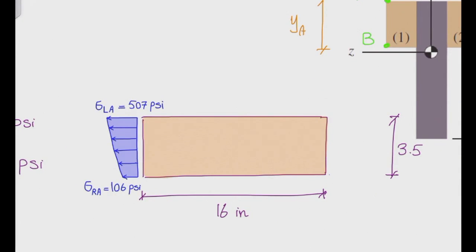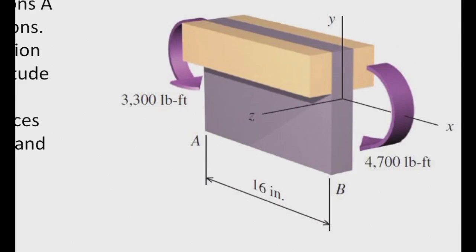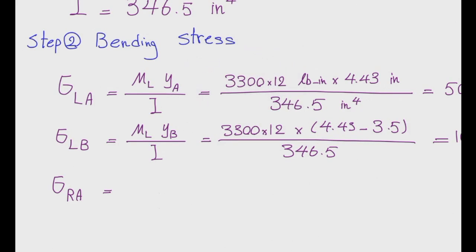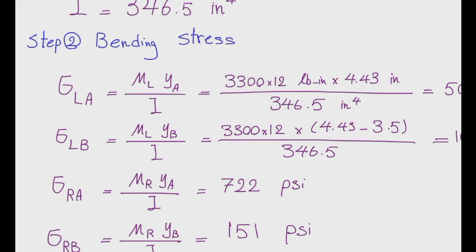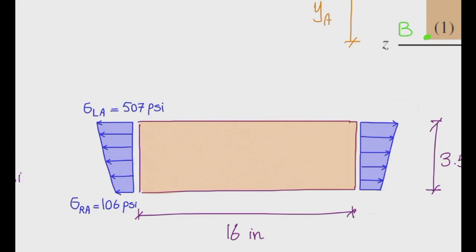Now let's calculate the bending stress on the right part of the beam. The moment on the right side is 4,700 pound-feet. Using the same equation, sigma_rA = M_right × Y / I = 4,700 × 12 / 346.5, with Y the same as before, giving 722 psi. Doing the same for point B on the right side gives 151 psi. So on the right part, stress on top is 722 psi and on the bottom is 151 psi.